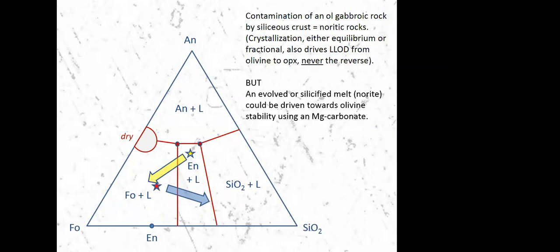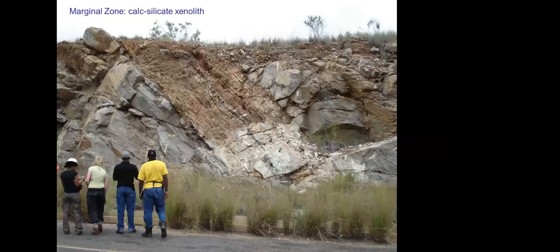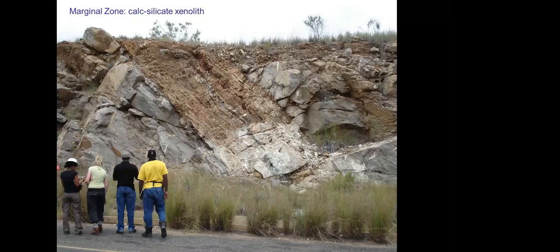However, we could envision a case where a more evolved magma gets contaminated by a dolomite. And in this space, dolomite is going to show up as mainly magnesium component. There's a little bit of calcium which would come out in the anorthite component. So we could move things to the left in this space if we invoked carbonate contamination. And I've never seen this diagram invoked in any kind of discussion along those lines, but there's no reason it couldn't be. Here's a nice xenolith of dolomite in a mafic magma. This is from the eastern Bushveld.